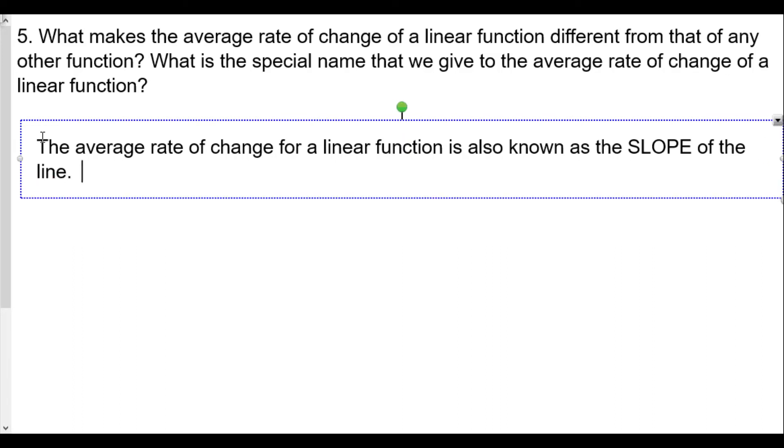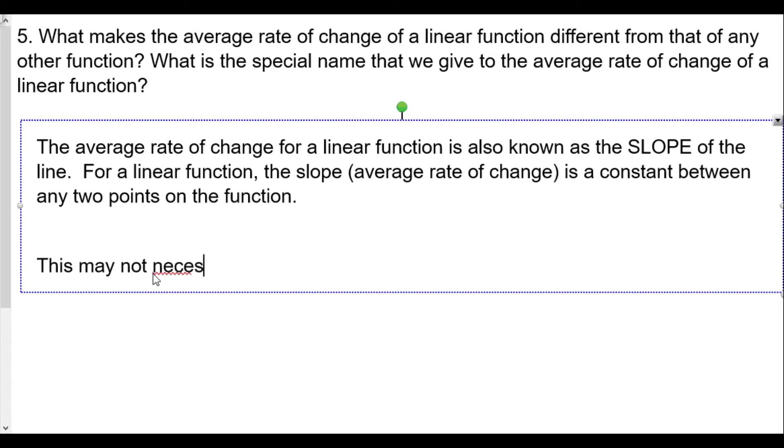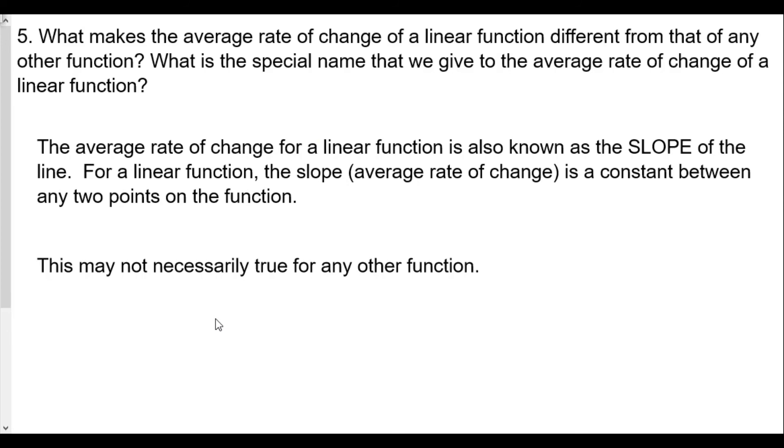For a linear function, the slope, or average rate of change, is a constant between any two points on the function. That's what's different from any other function. This may not necessarily be true for any other function.